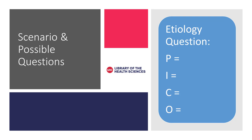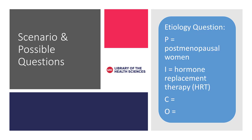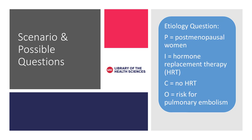Let's say we are interested in the population of postmenopausal women. This is still specific to our patient, but not to their chronic disease. Next, the intervention we want to know more about is the estrogen that the patient is taking. We could simply use estrogen as our intervention, but since we aren't sure if this might be too specific, let's look more broadly at hormone replacement therapy, or HRT. Our comparison is simple in this question — we want to look at HRT versus no HRT. And finally, the outcome that we are interested in is risk for pulmonary embolism.